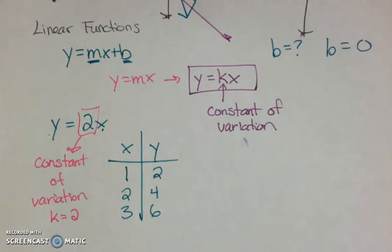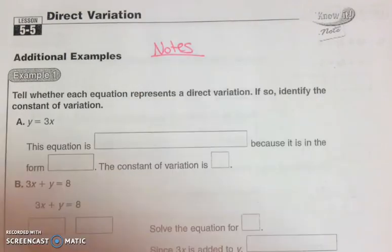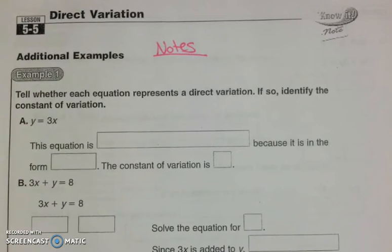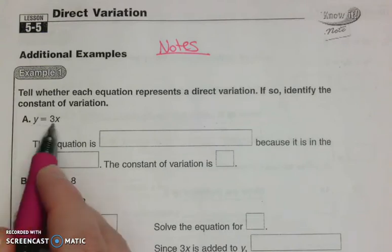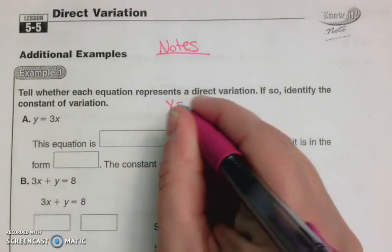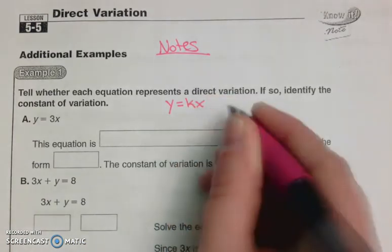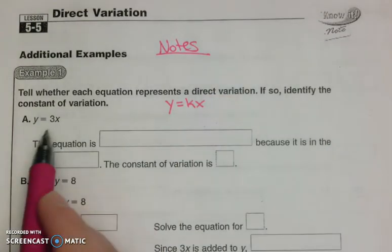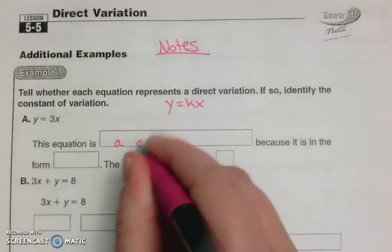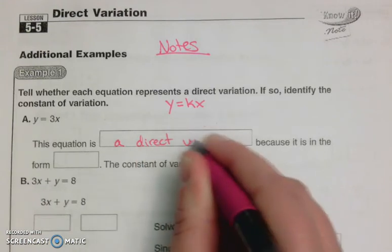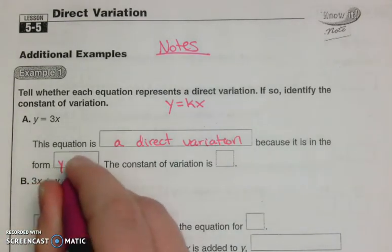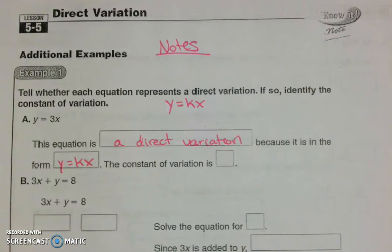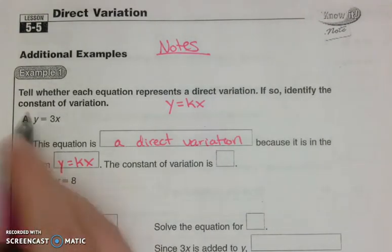Now let's turn to the handout, which goes through some examples. Tell whether each equation represents a direct variation; if so, identify the constant of variation. For part a: y = 3x. Direct variation is in the form y = kx — there's a number in front of x and nothing added after it. So this equation is a direct variation, because it is in the form y = kx, and the constant of variation k is 3.